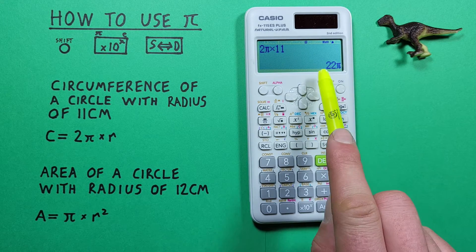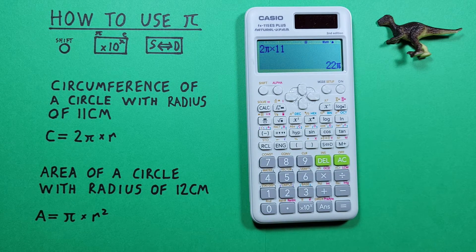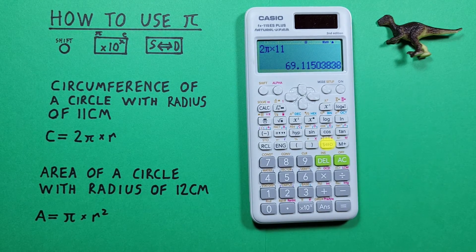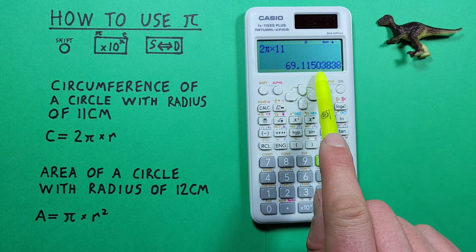And we see this gives us a result of 22 pi which if we want to convert that to a decimal we can press the s to d key, and we get a circumference of 69.1150 etc.